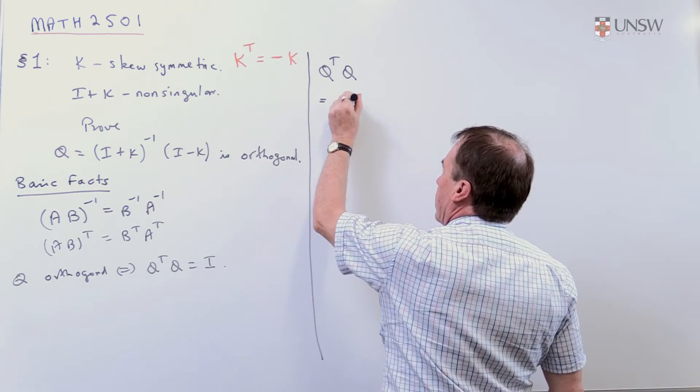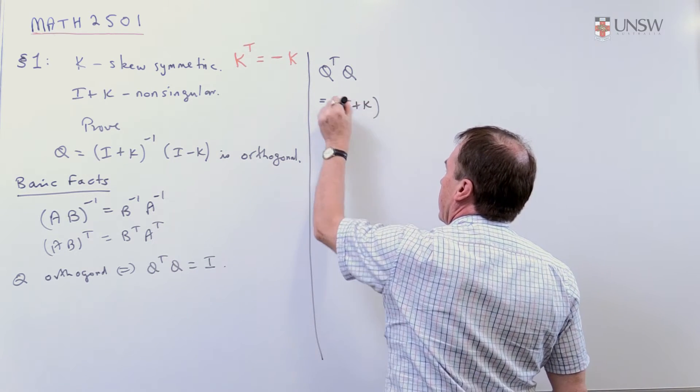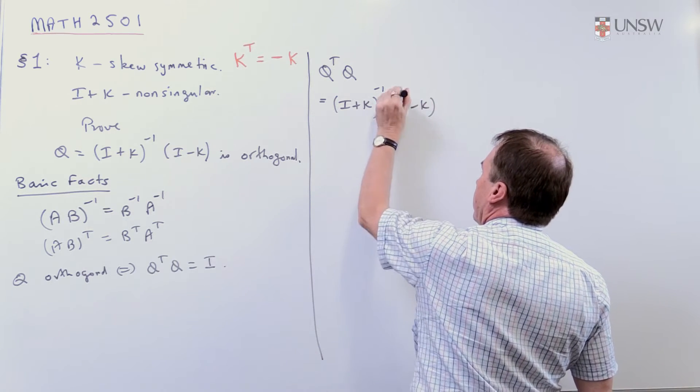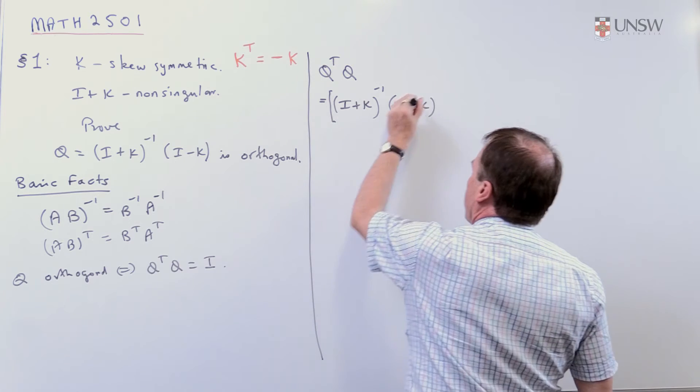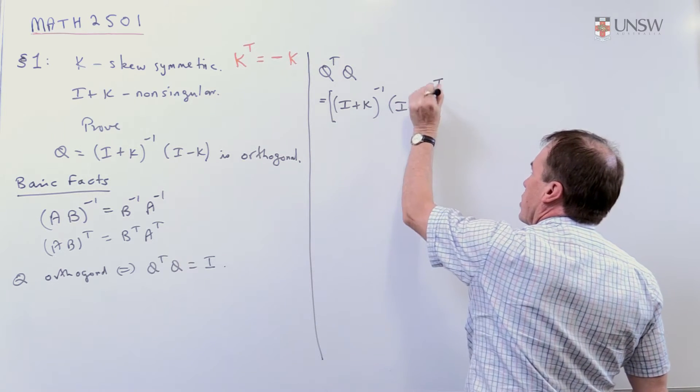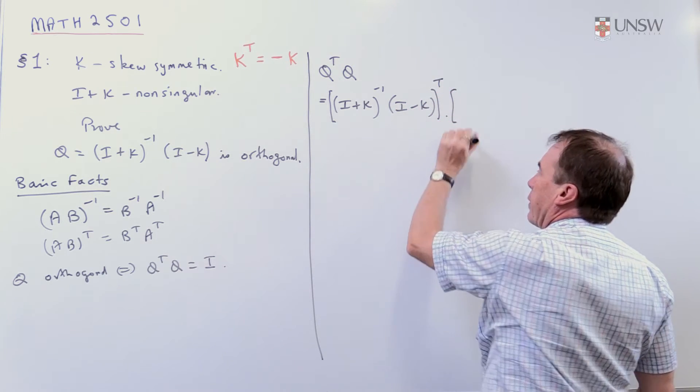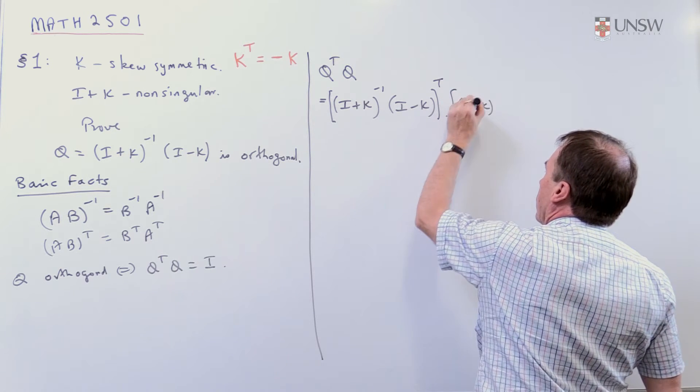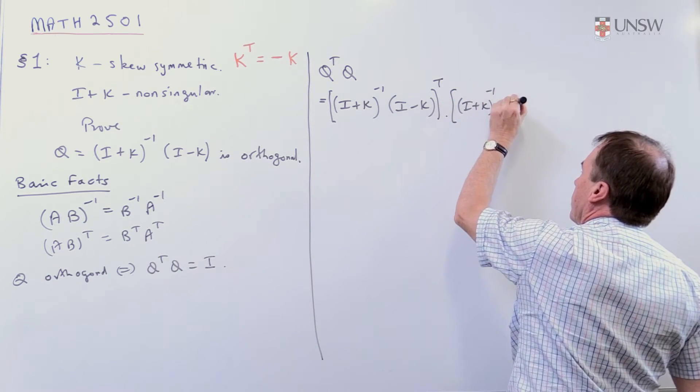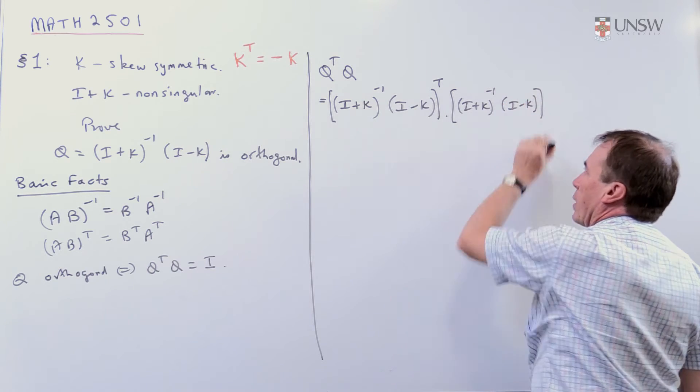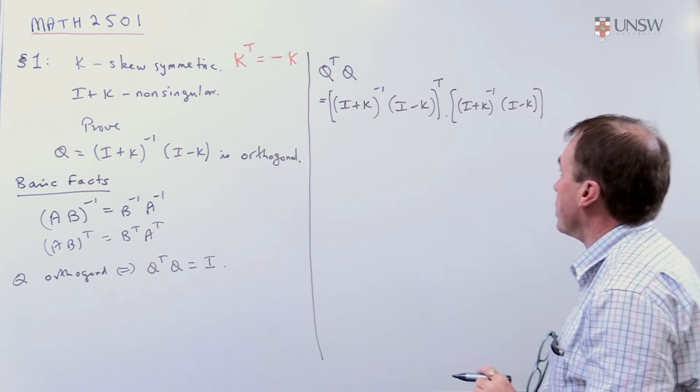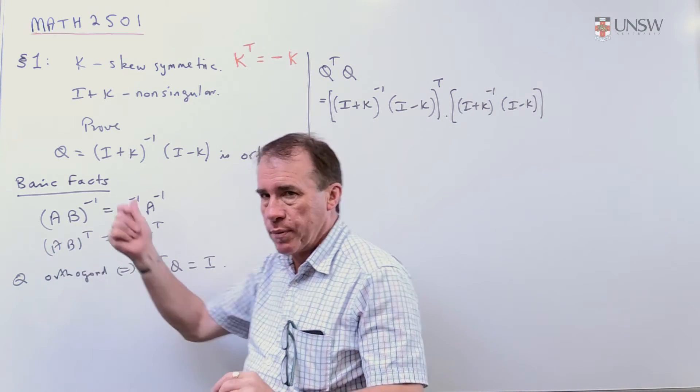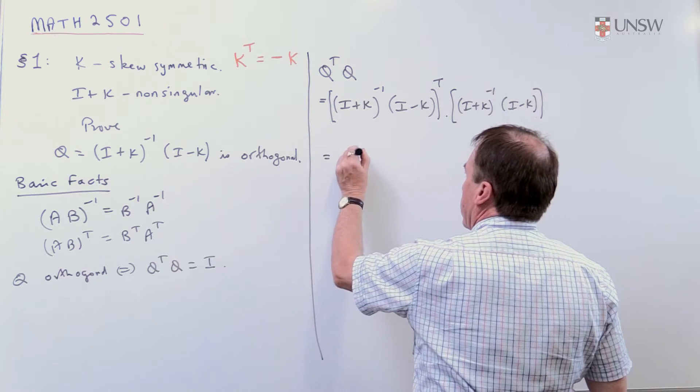So, I'm going to start by looking at Q transpose Q. So that means I'm going to be looking at I plus K, all inverse, times I minus K. And I'm going to take the transpose of all of that expression, and then I'm multiplying that by the expression itself. So that's I plus K, all inverse, times I minus K. So, we've got a rather complicated mess here. Now, in keeping in mind this basic fact, the transpose of the product is the product of the transposes backwards.